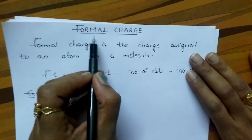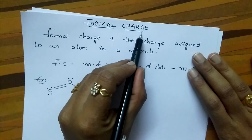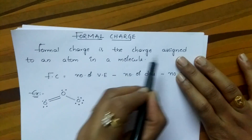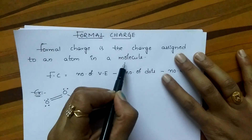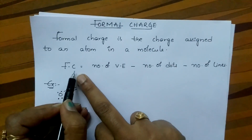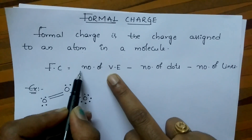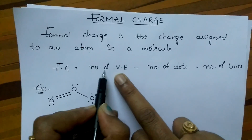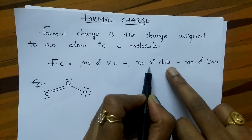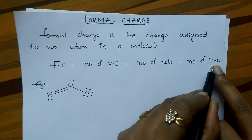Hi everyone, today I am going to explain formal charge. Formal charge is the charge assigned to an atom in a molecule. We can find formal charge easily by using this formula: formal charge is equal to number of valency electrons minus number of dots minus number of lines.